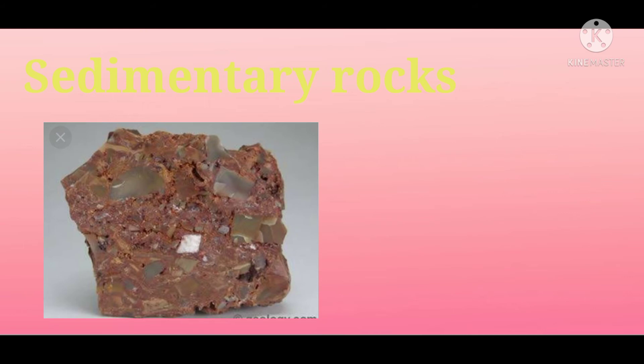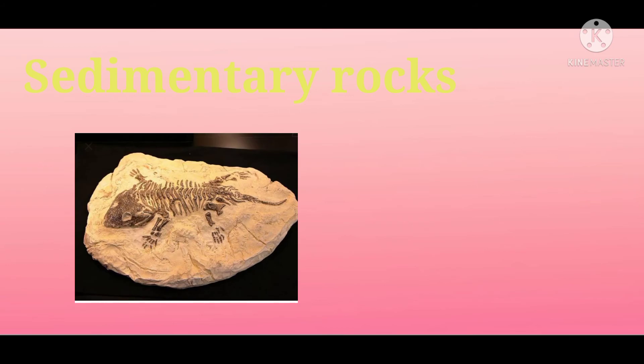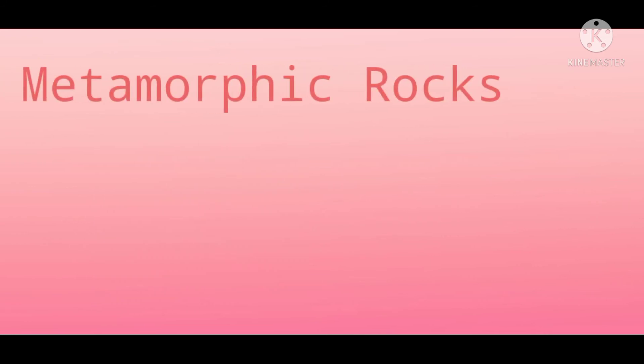Sedimentary rocks: rocks roll down, crack, and hit each other and are broken down into small fragments called sediments. These sediments are transported and deposited by wind, water, etc. The loose sediments are compressed and hardened to form layers of rocks, and these are called sedimentary rocks — for example, sandstone, which is made of grains of sand. Sedimentary rocks also contain fossils of plants, animals, and other microorganisms.